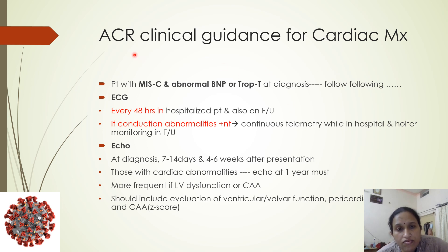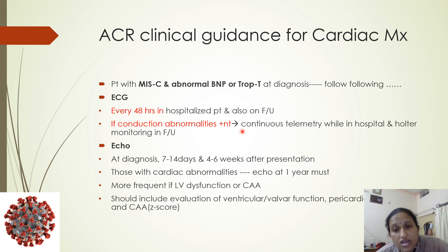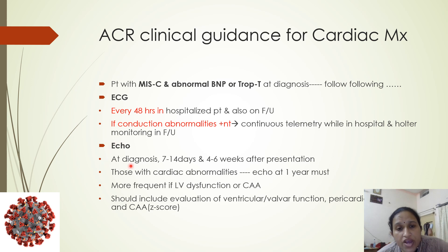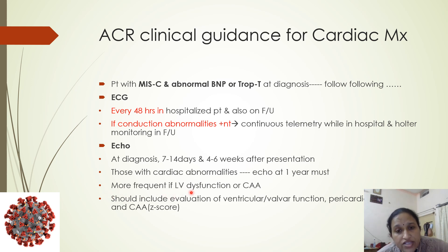For cardiac management, the American College of Rheumatology provides clinical guidance. Patients with MIS having abnormal BNP or troponin require ECG every 48 hours while hospitalized. If conduction abnormalities are found, continuous telemetry is needed during hospitalization, and Holter monitoring at follow-up. Echocardiography should be performed at diagnosis, again at 7 to 14 days, and again at 4 to 6 weeks after presentation. Those with cardiac abnormalities require echo at 1 year to assess myocardial status, with more frequent echocardiography if left ventricular dysfunction or coronary artery abnormalities are present.